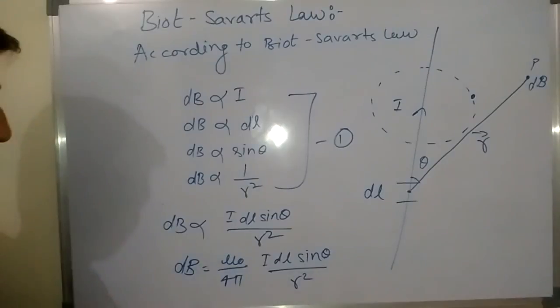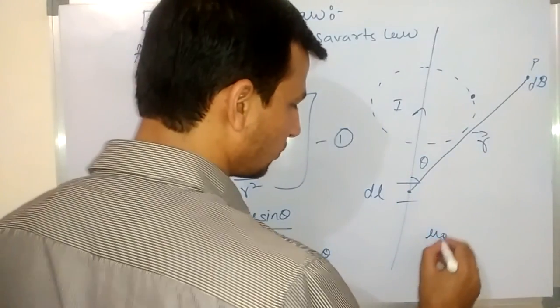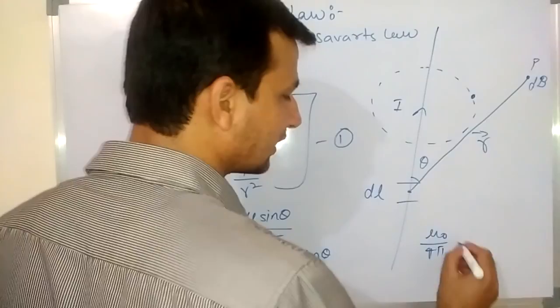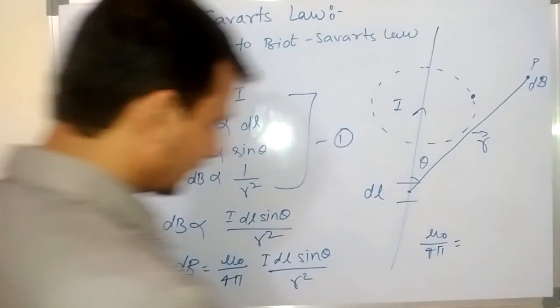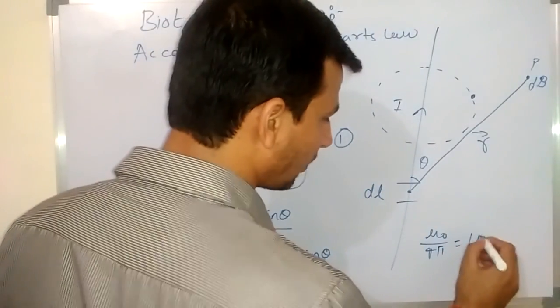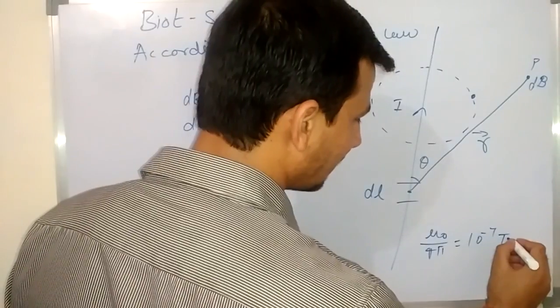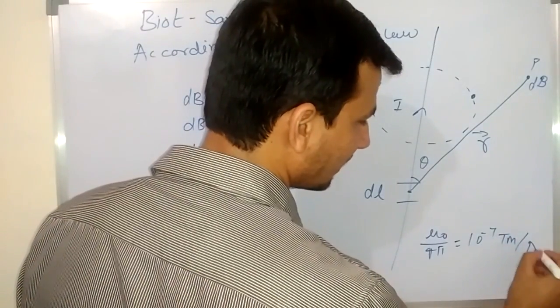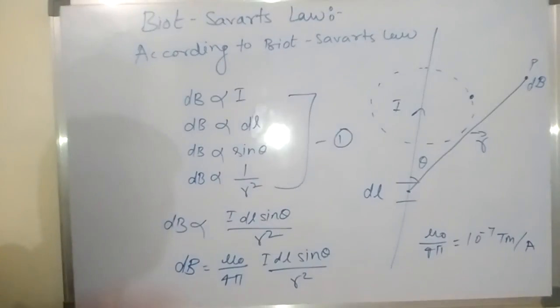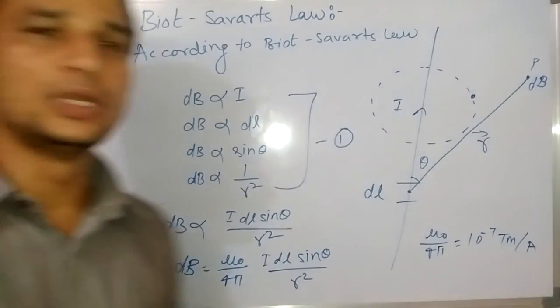Here mu naught by 4 pi is a constant and its value is 10 to the power minus 7 tesla meter per ampere. This is Biot-Savart's law.